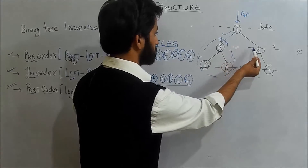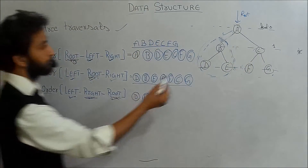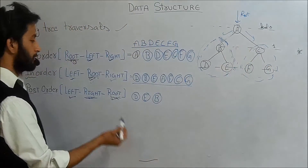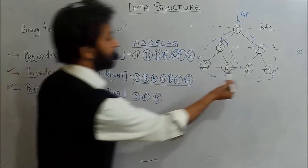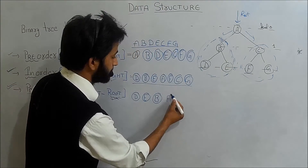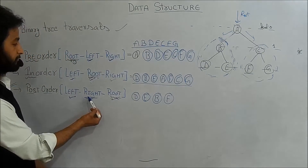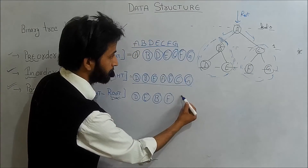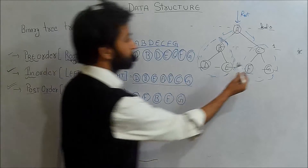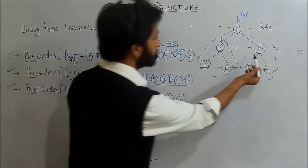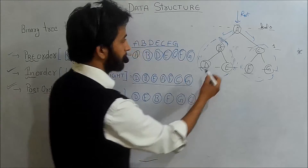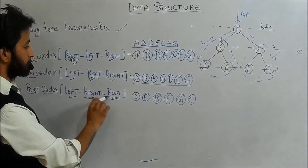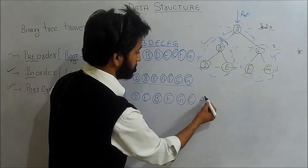Before going to the root, we write the right subtree C, F, G. The left element of that subtree is F, the right is G, and then the root C. After both subtrees are complete, we write the root of the entire tree which is A. So post-order traversal is D, E, B, F, G, C, A.